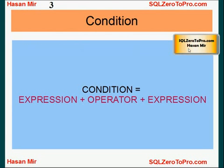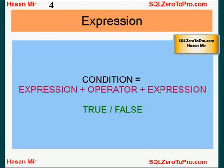The WHERE clause consists of a condition. A condition is basically different expressions separated by operators. For example, a condition like WHERE ID is equal to 2 — ID is one expression, 2 is another expression, and the equal-to sign is an operator — an equality operator. The condition returns either true or false, with the operators applied to the expressions.